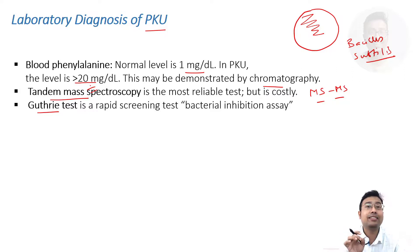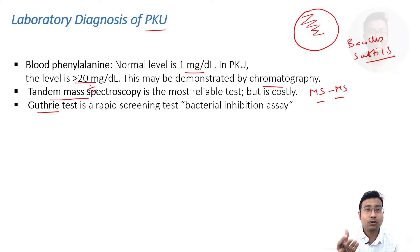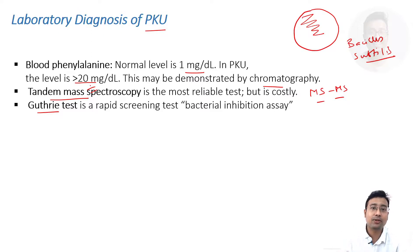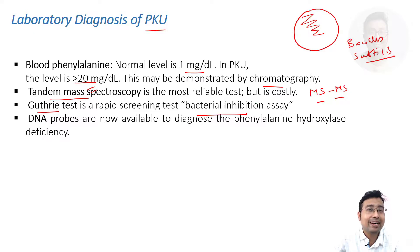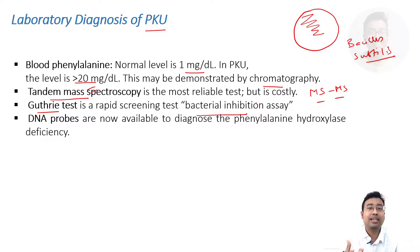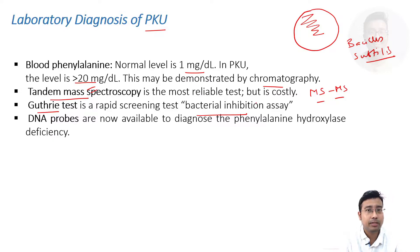Normally if Guthrie's test is negative, bacteria will not grow. If bacteria grows, it is bad news for the patient. It is known as a bacterial inhibition assay because normally it is inhibited, but in phenylketonuria bacteria will grow. Nowadays we have direct DNA probes that can diagnose the defective area of the gene coding for phenylalanine hydroxylase or dihydrobiopterin reductase. Gene probes or DNA probes are the modern diagnostic modalities.